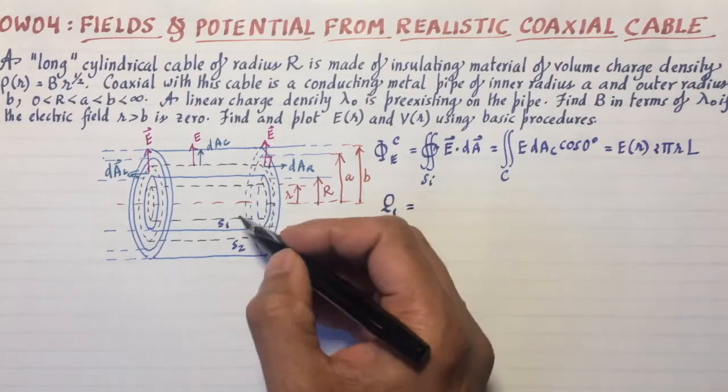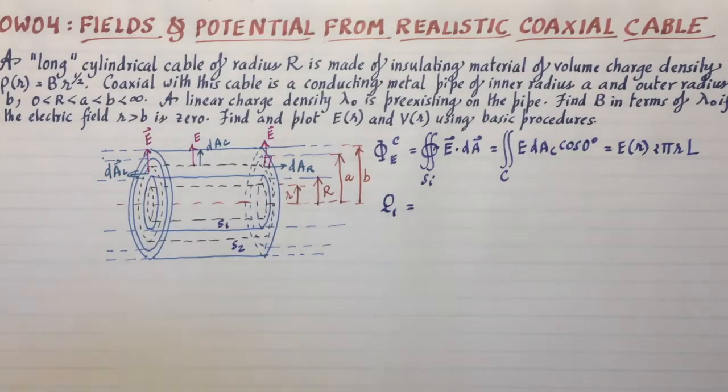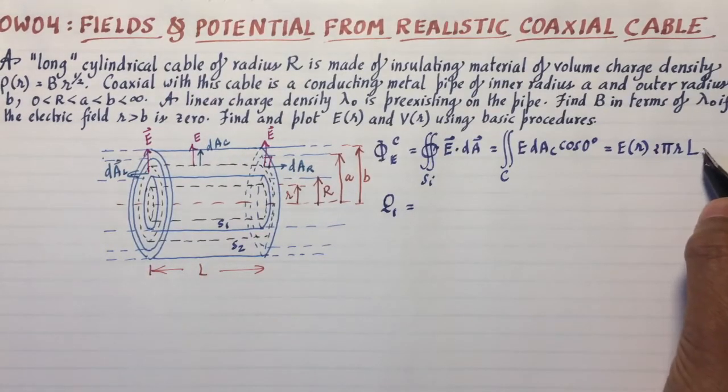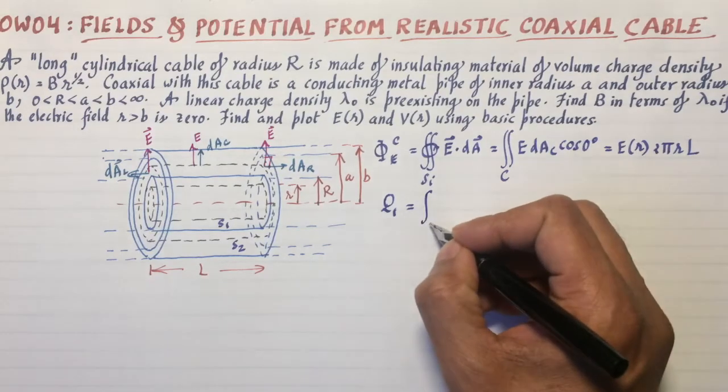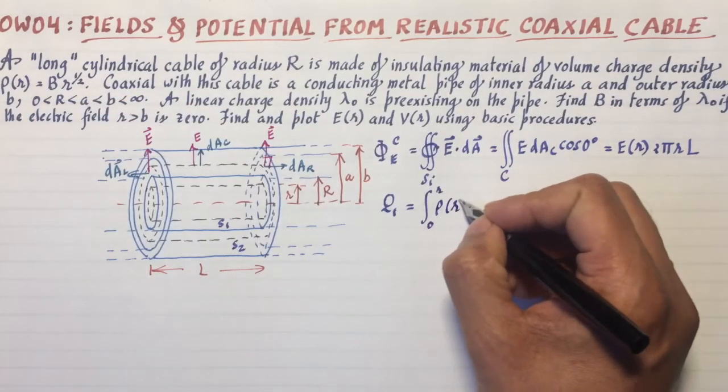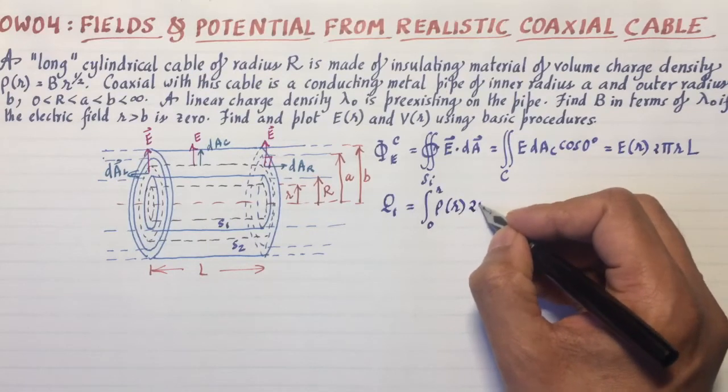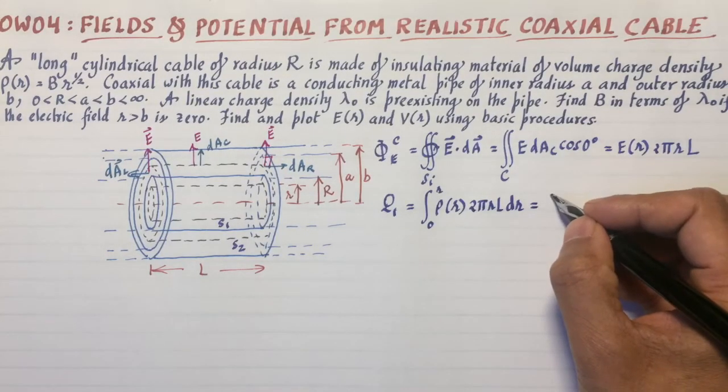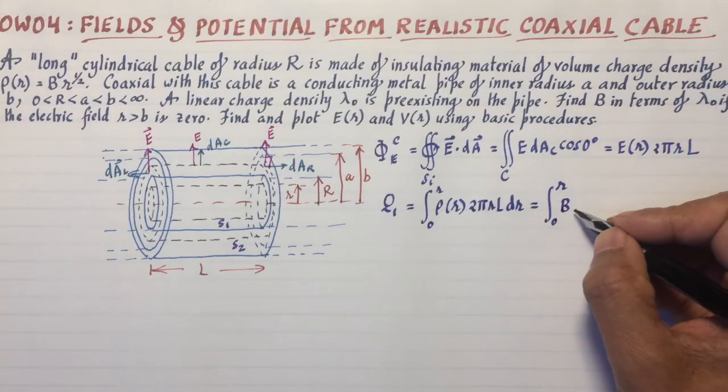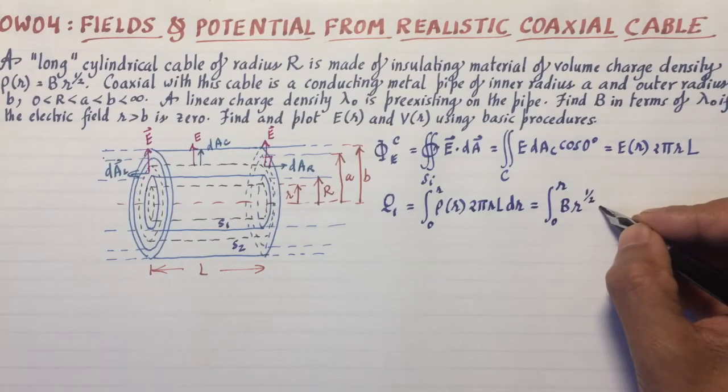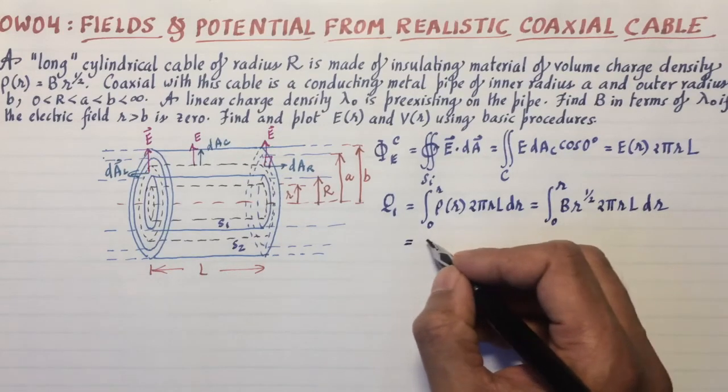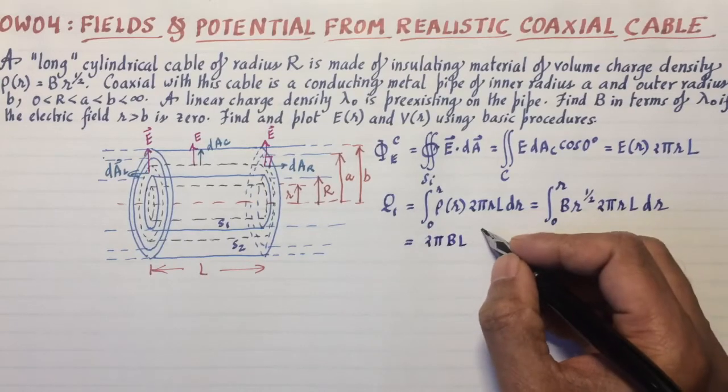The electric field magnitude stays the same as you go around. So I'll pull that out and write E as a function of r. And then I'm just left with the area of a cylinder, and that's 2πrL. I should take a moment to indicate some values here. This is the radius of the Gaussian surface, that's the radius of the core, that's A and that's B.